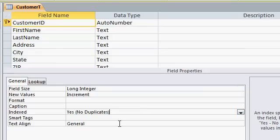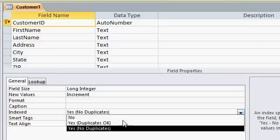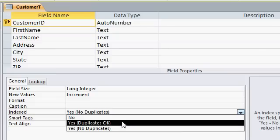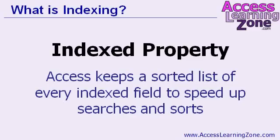And of course with auto numbers that's a necessity, but if you look here and drop this down, there are two other options: no, and yes duplicates okay. Now in addition to preventing duplicate values, indexing has a secondary property.